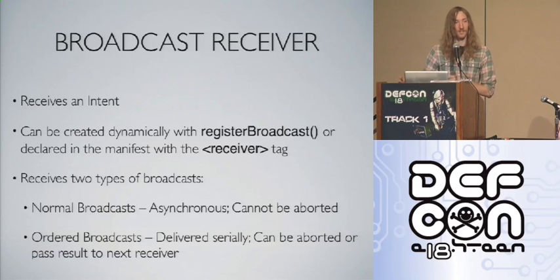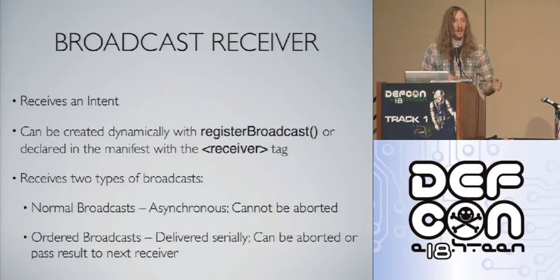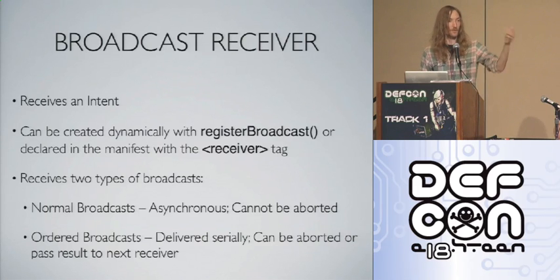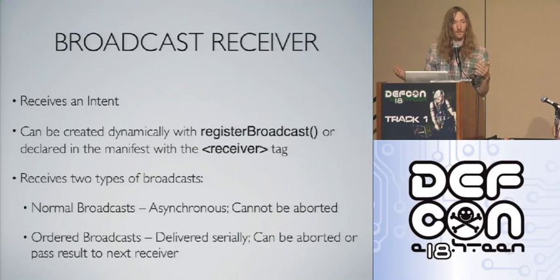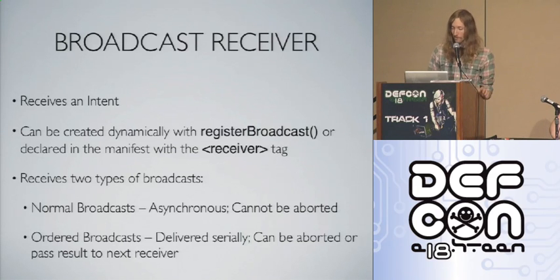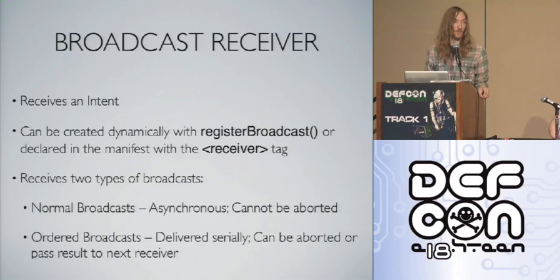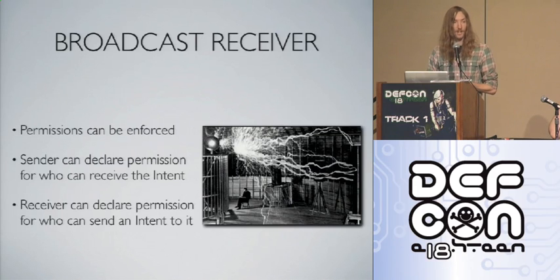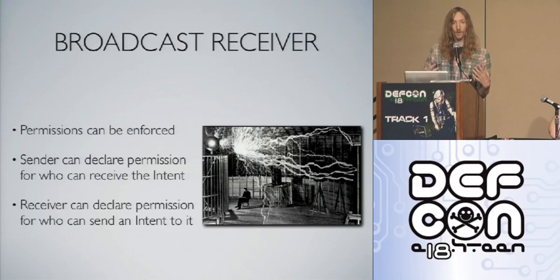Broadcast receivers receive those intents. With ordered broadcasts, intents are sent sequentially to each receiver — when one receives it, it gets the result from the previous one, can do processing, abort the broadcast so no one further down the line receives it, or pass results to the next receiver. Broadcast receivers can be registered dynamically or declared as a static receiver tag in the manifest. They can also have permissions enforced on them.